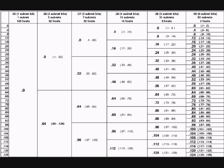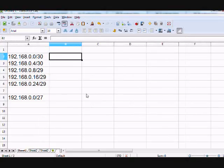There are two methods that I've seen employed to basically build these aggregate routes, or these summary routes. One method is just like I've shown — knowing that a network basically encompasses both of them, I can just advertise it out that way. So if I have, let's say this network, I know a slash 30 gives me two usable bits for my hosts, which means I have a block size of four. I can go from zero to three on this one.